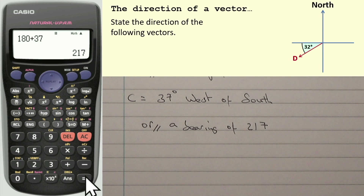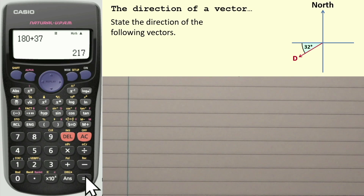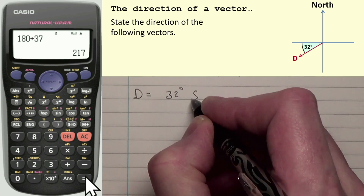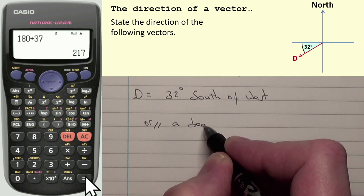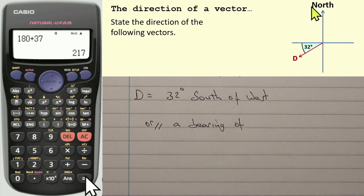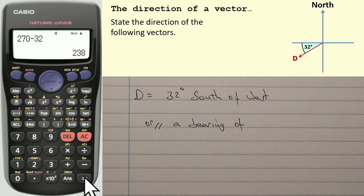Next up we have vector D. Pause the video, then get the answer. Vector D: we're measuring from west and from west we're coming towards the south, so that's 32 degrees south of west. As a bearing, north is 000, east 090, south 180, west 270. Because it's coming anti-clockwise from west, I subtract 32 from 270: 270 − 32 = 238. So a bearing of 238.